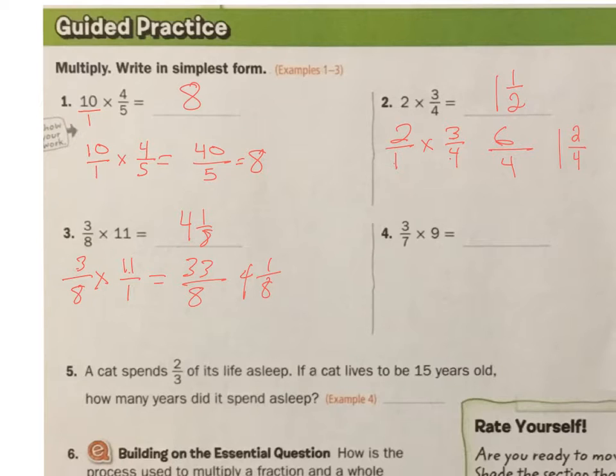Alright, let's do number 4. 3 over 7 times 9 over 1. 3 times 9 is 27, and 7 times 1 is 7. How many 7s go into 27? Let's see. 3 would be 21. 4 would be 28. So 3. And then that leaves me with 6 over 7. 3 and 6 sevenths.